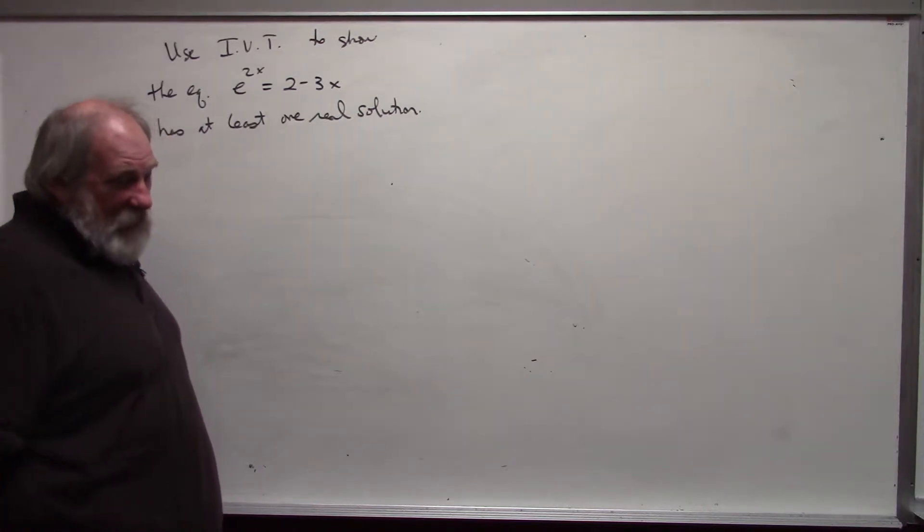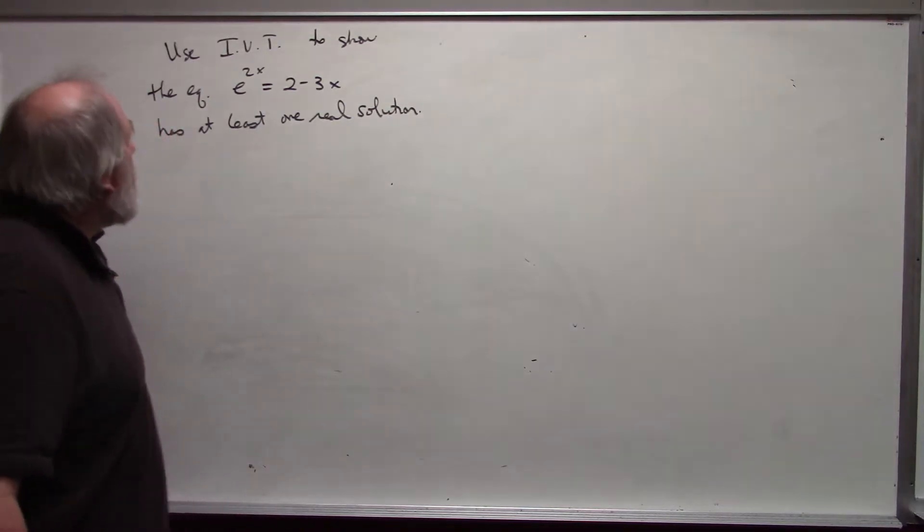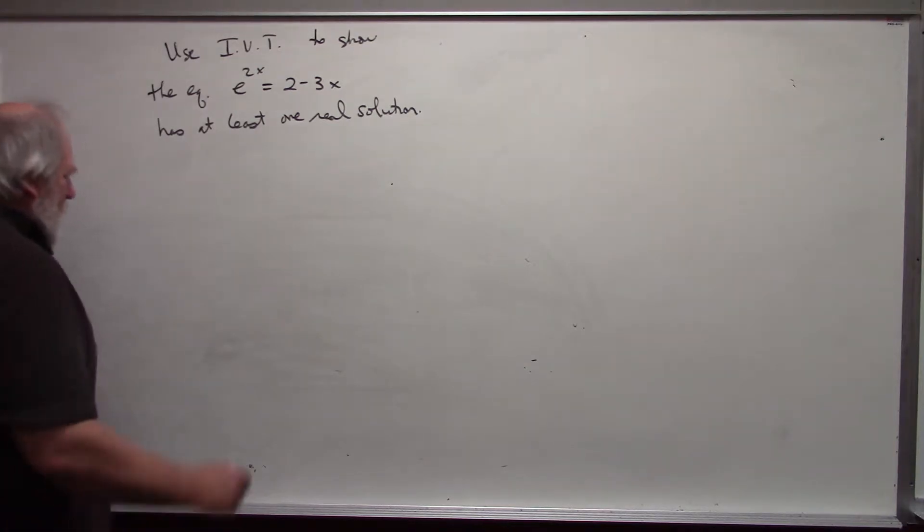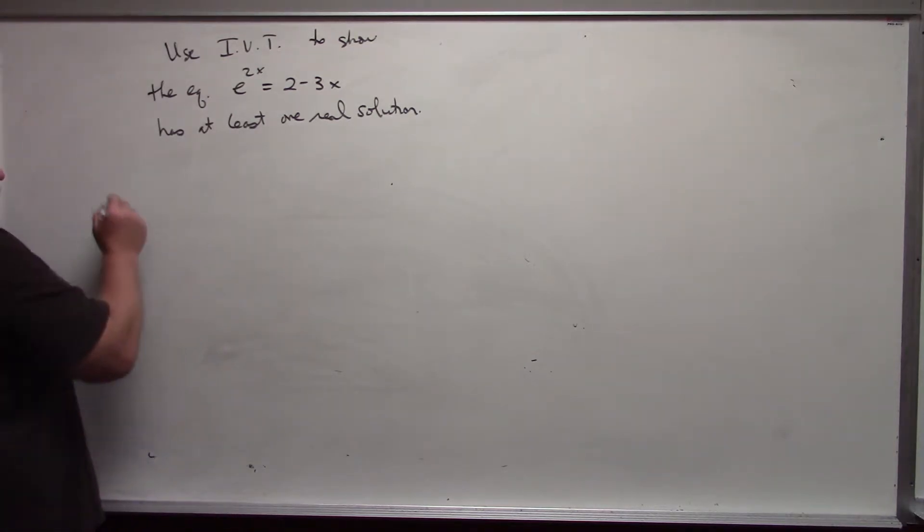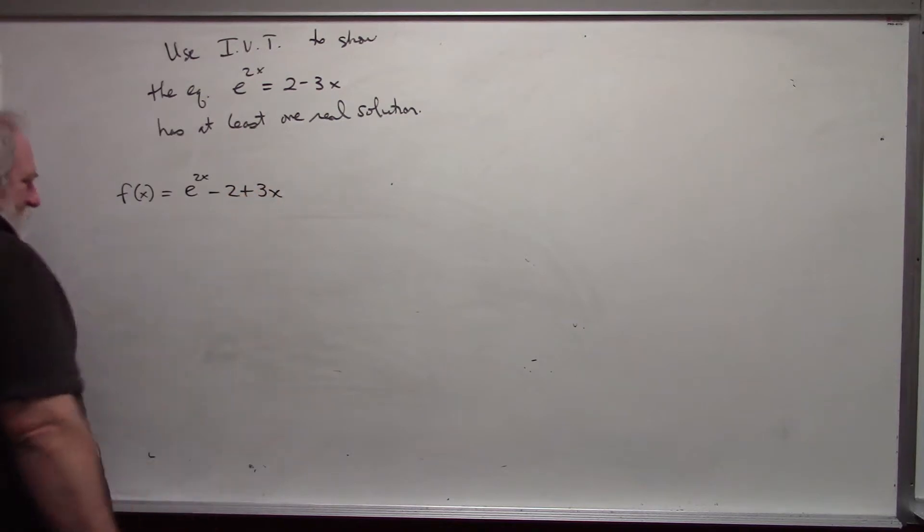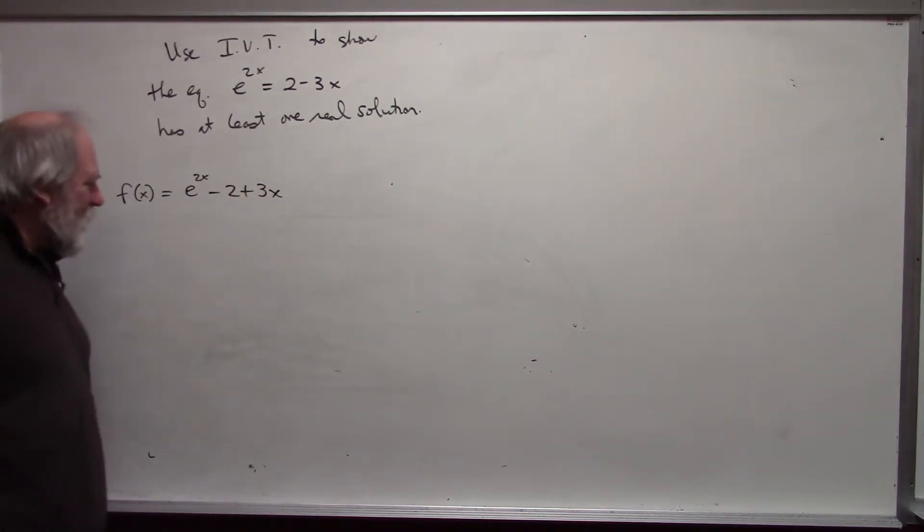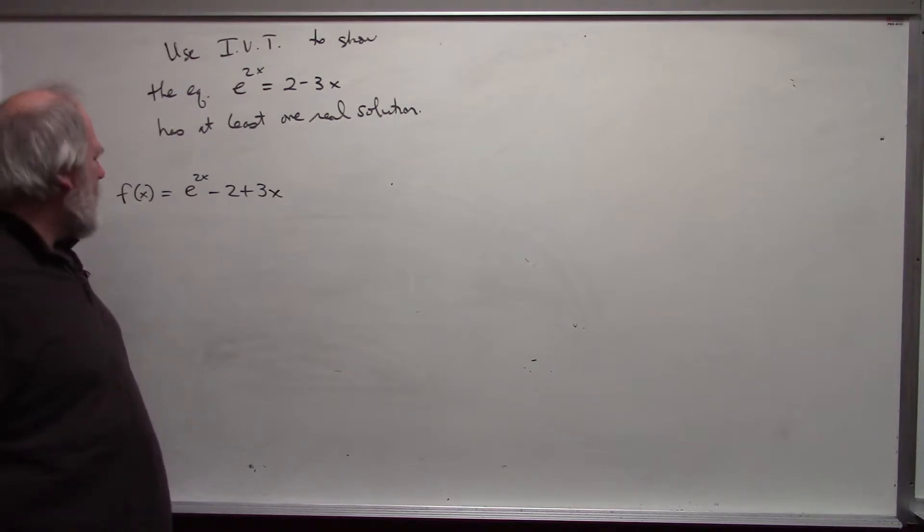A function is just a rule. You put in a value for x, it gives you some output, assuming the value we put in is in the domain of the function. So they are not the same. I need to create a function. So the first thing we do is create a function. I'm going to let F(x) be e^(2x) - 2 + 3x. Basically, I just move everything to one side of the equal sign and that becomes my function.